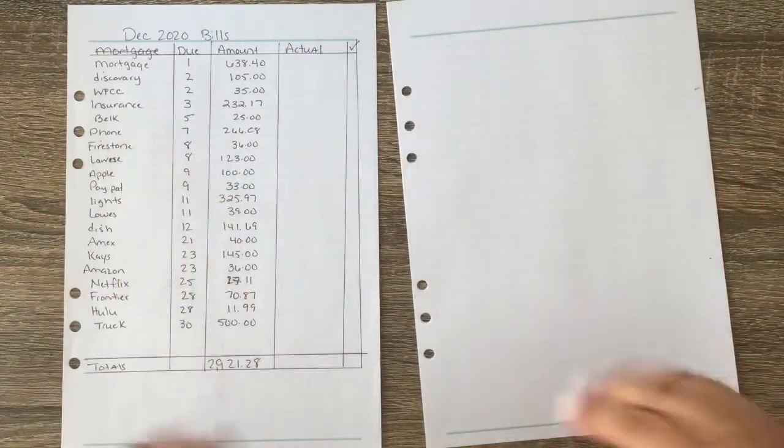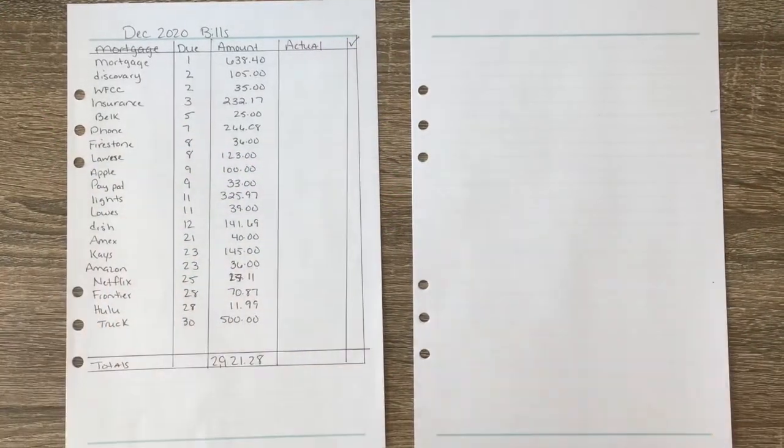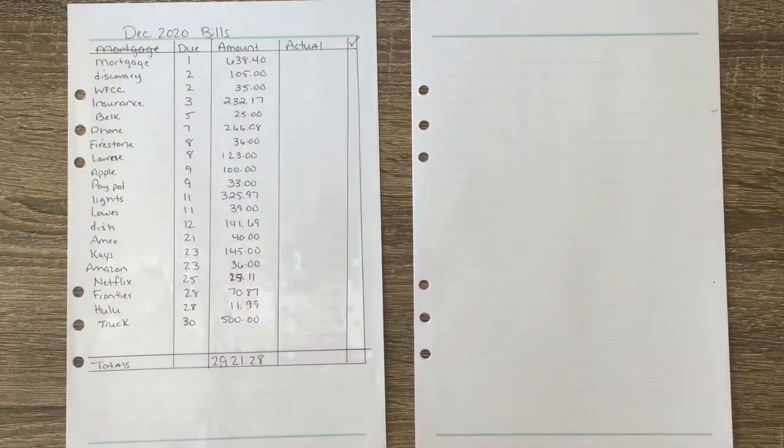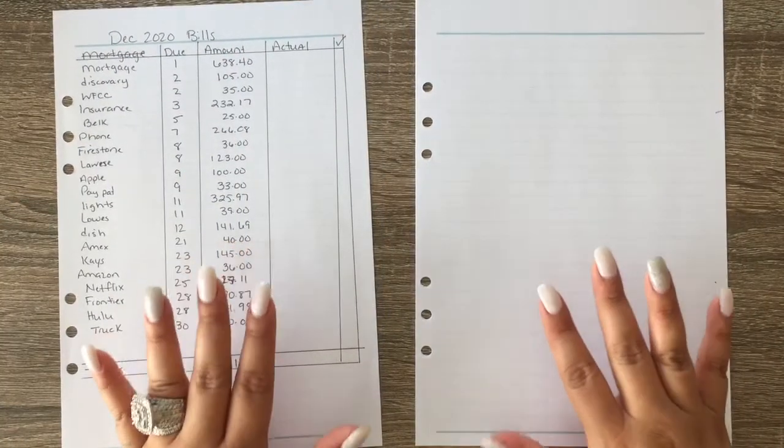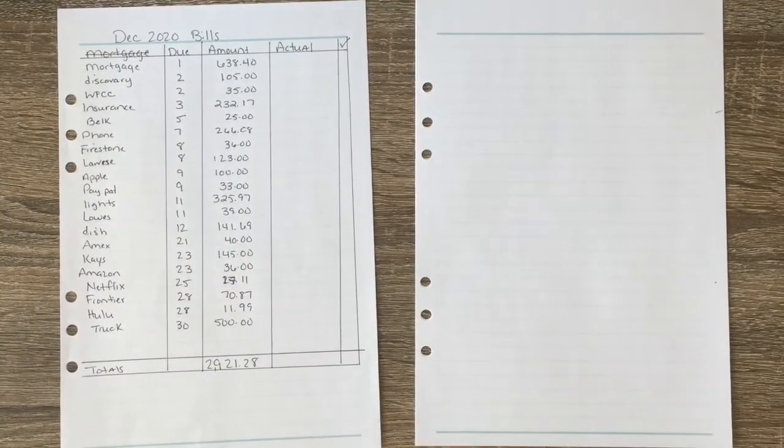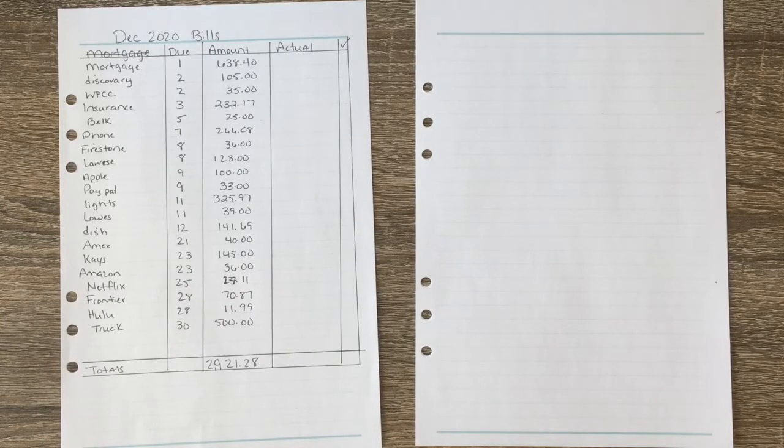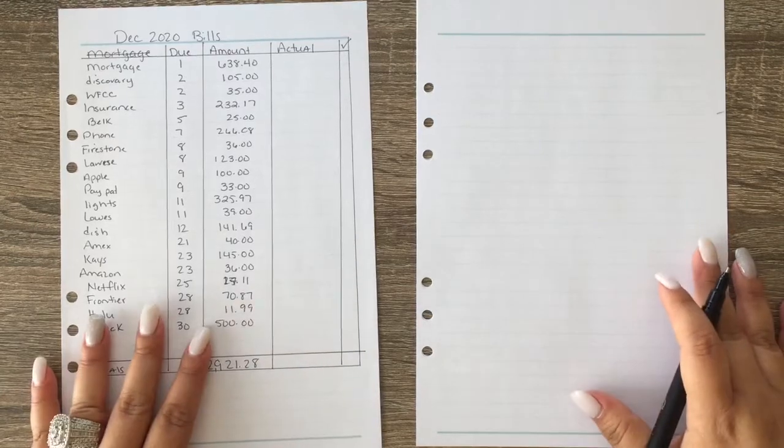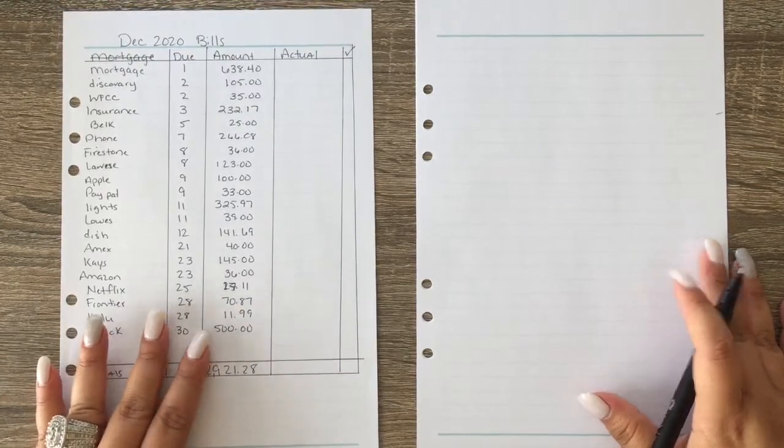Hi guys and welcome back to my channel, my name is Cassandra and this is the average life of Cassandra. I'm on a debt-free journey and we are going to be doing our paycheck by paycheck for paycheck number four which we received on the 25th. This is my cheat sheet for the bills that are due in December.